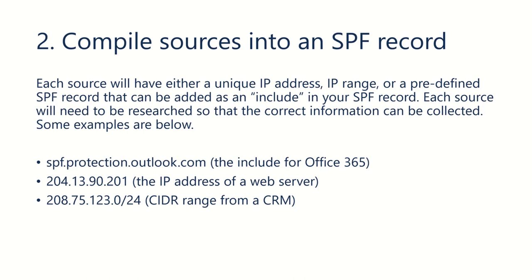If you were sending emails from your web server, you may need that IP address, or you may have a range of IP addresses. For example, we have this CIDR range here that may be coming from a CRM. So after collecting all of those sources, then we have to create that SPF record.